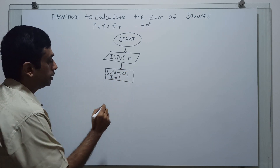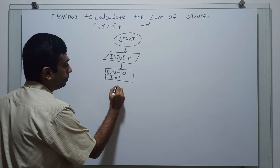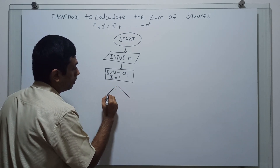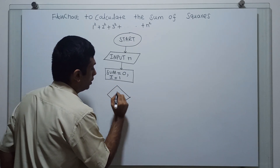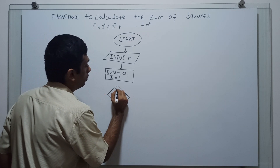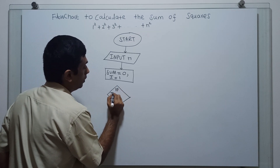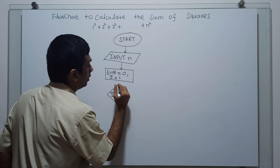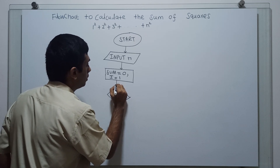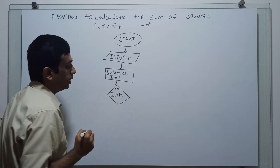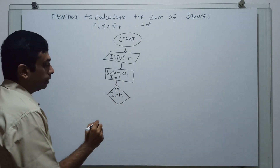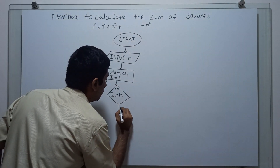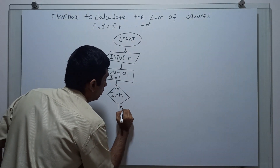I am checking a condition: if i is greater than n. The 'no' branch means false — when the condition is not satisfied.